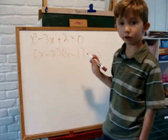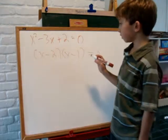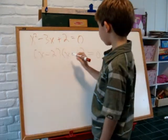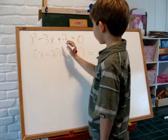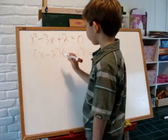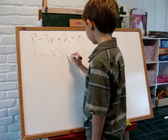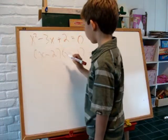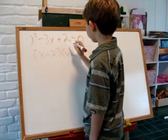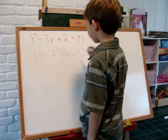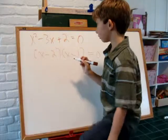How did I know that? Well, once multiplied, we get the same equation we originally started with. x times x equals x squared. Negative 2 times negative 1 equals positive 2. And when we multiplied the middle terms, we get negative 3x.